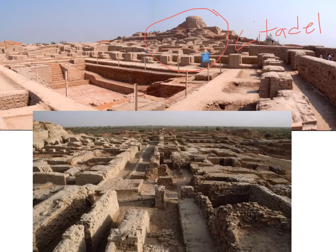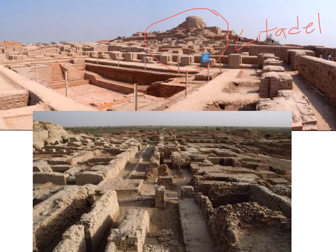Outside the city, canals ran along the Indus River, which often flooded. The canals controlled the flooding and directed water where it was needed most. You can see the baked brick ruins of Mohenjo-daro and its citadel in the present-day country of Pakistan.